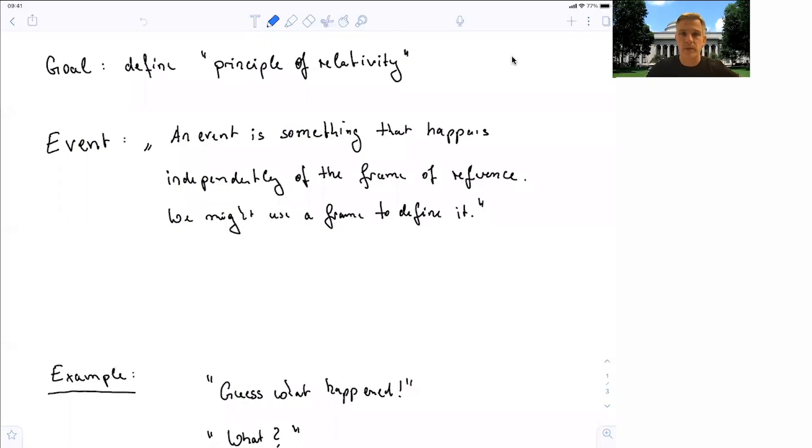Welcome back to H20. In this section, we want to define events and frames. The goal is to define the principle of relativity. So let's think first about what an event actually is. An event is something that happens independently of the frame of reference, independently of how we want to describe the event itself. You might use a reference frame to define the event, but the event is an independent thing which happens.